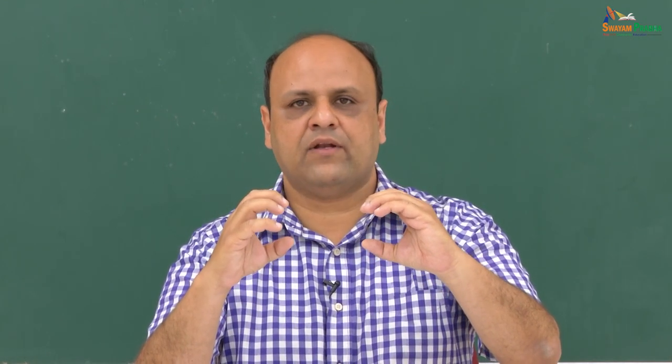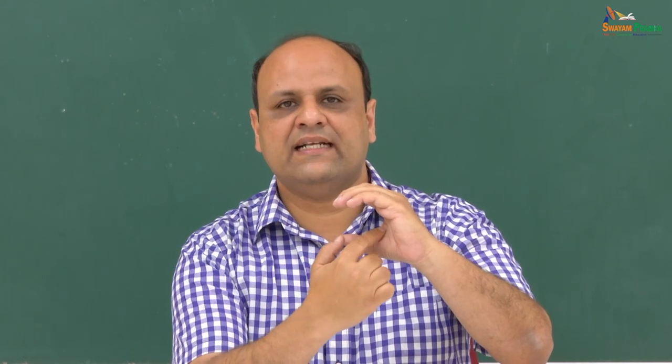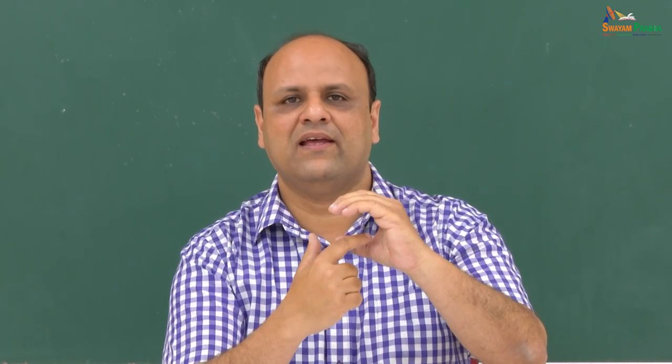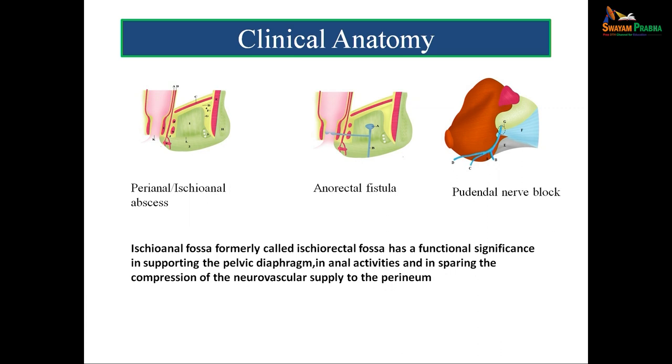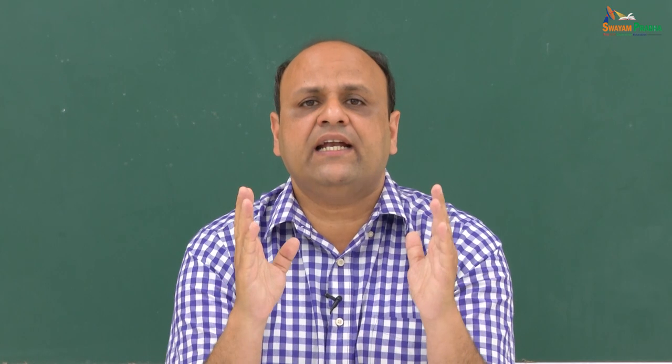In the center is the anus, and on either side is the ischioanal fossa. The lateral wall contains a canal known as the pudendal canal. This pudendal canal carries the neurovascular supply of the perineum. The fat in the fossa protects the pudendal canal. The pudendal canal is also a component of the ischioanal fossa, and it gives the fossa vital importance as the neurovascular supply of the perineum. The main content of the ischioanal fossa is fat, though there are actually six constituents.